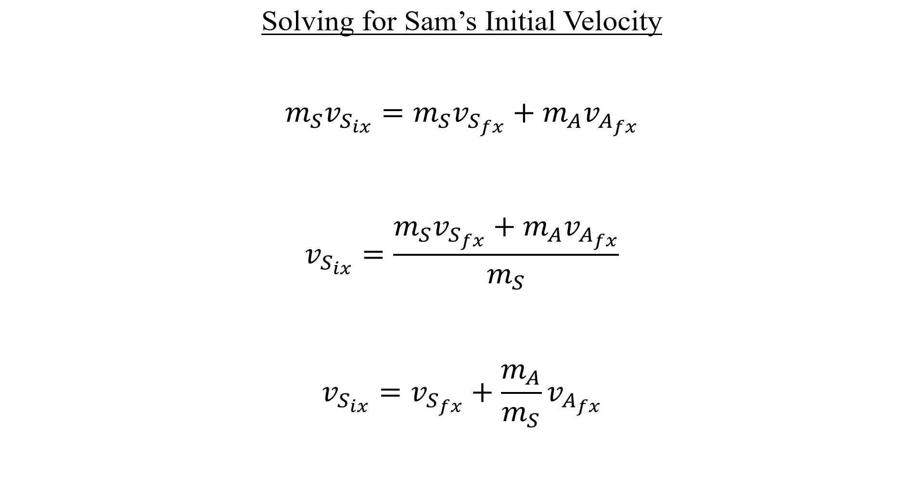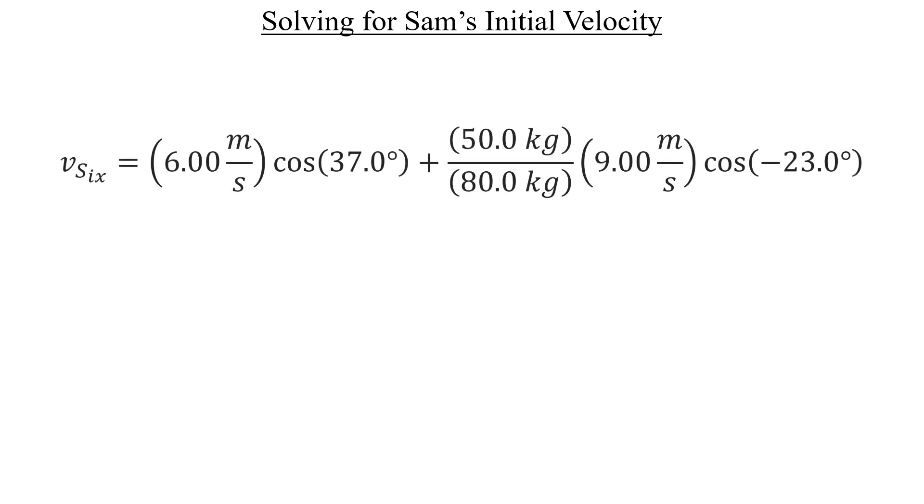Let's go ahead and plug in the numbers, and be sure to use the cosine component of the final velocities, since we're working purely in the x direction here. We'll get the following initial velocity for Sam, and that's one half of part A done.